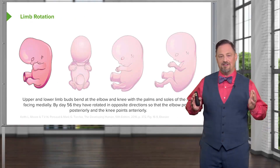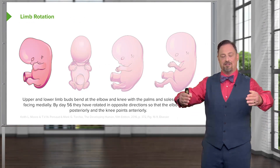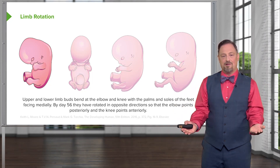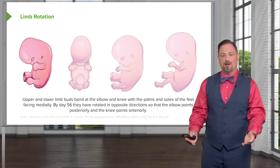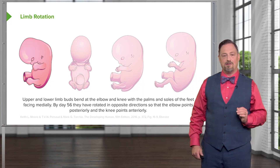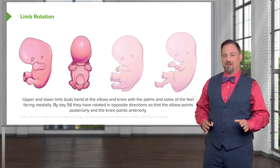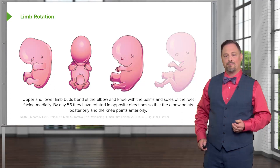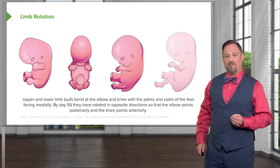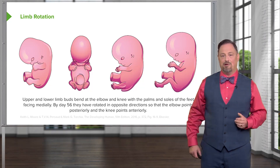As the limbs are extending, the upper and lower limb undergo a differential rotation that brings about the normal conformation we have in the adult. The upper limbs rotate so that the elbow is pointing posteriorly, putting all the flexor muscles anteriorly. The lower limb has the opposite happen — the limbs rotate so that the knee winds up pointing anteriorly and all the extensor muscles are on the anterior surface of the lower limb. That rotation difference between the upper and lower limb is what brings about the difference between extensors and flexors.